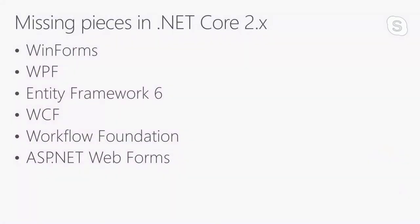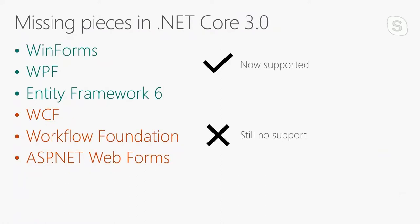Every version of .NET Core has been filling some gaps of what was possible in .NET Framework and what's now possible in .NET Core. With .NET Core 3.0, we can do desktop applications in WinForms and WPF, and we can also use Entity Framework 6, which is very popular and widely used. But there are some gaps that will probably never be filled. For example, ASP.NET Web Forms, which won't be ported to .NET Core. So you have basically two options.